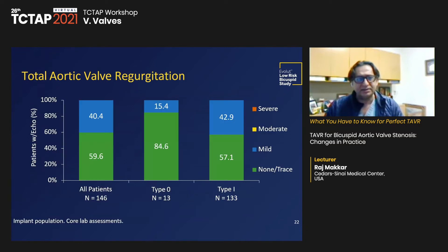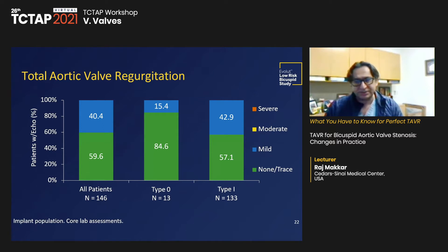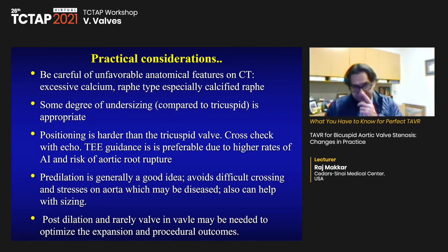Valve areas and aortic regurgitation: mild PVL was more prevalent at 42%, so we need to improve that, especially with younger patients.